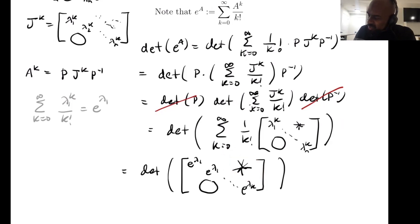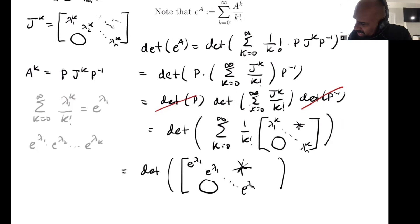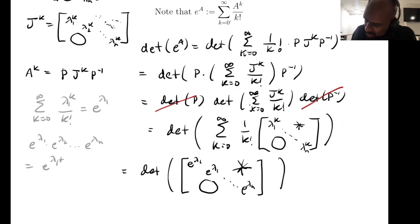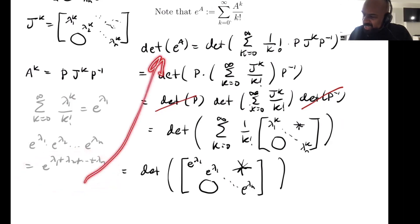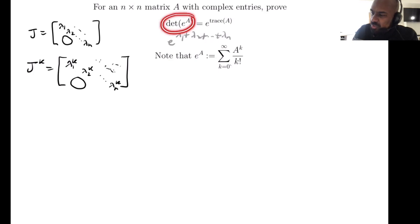The determinant of this upper triangular matrix is the product of the diagonal entries: e^(λ₁) times e^(λ₂) times ... times e^(λₙ). Writing this in compact form, we get e^(λ₁ + λ₂ + ... + λₙ). So we've shown that det(e^A) equals e raised to the sum of the eigenvalues of the matrix.